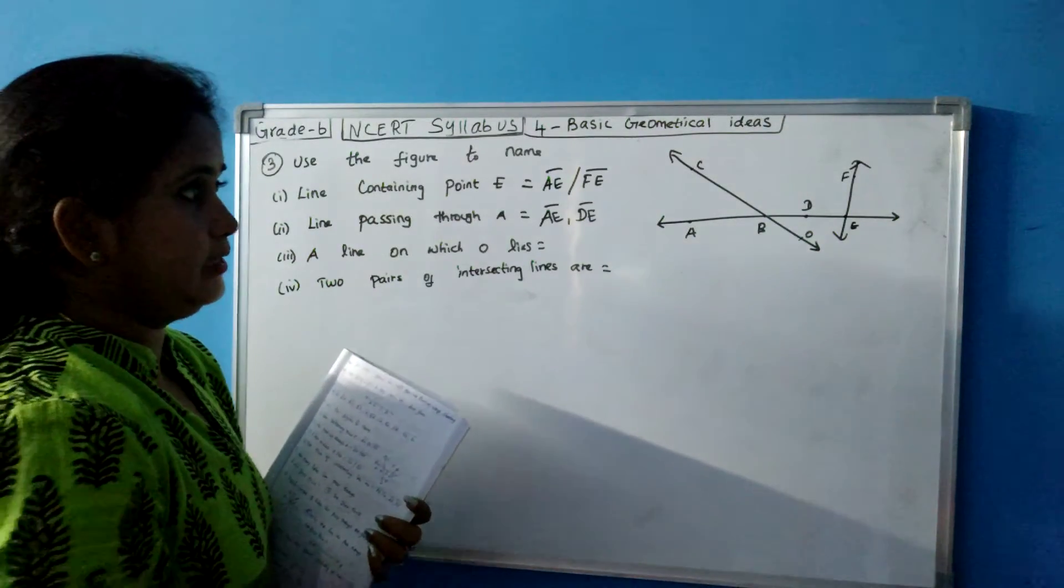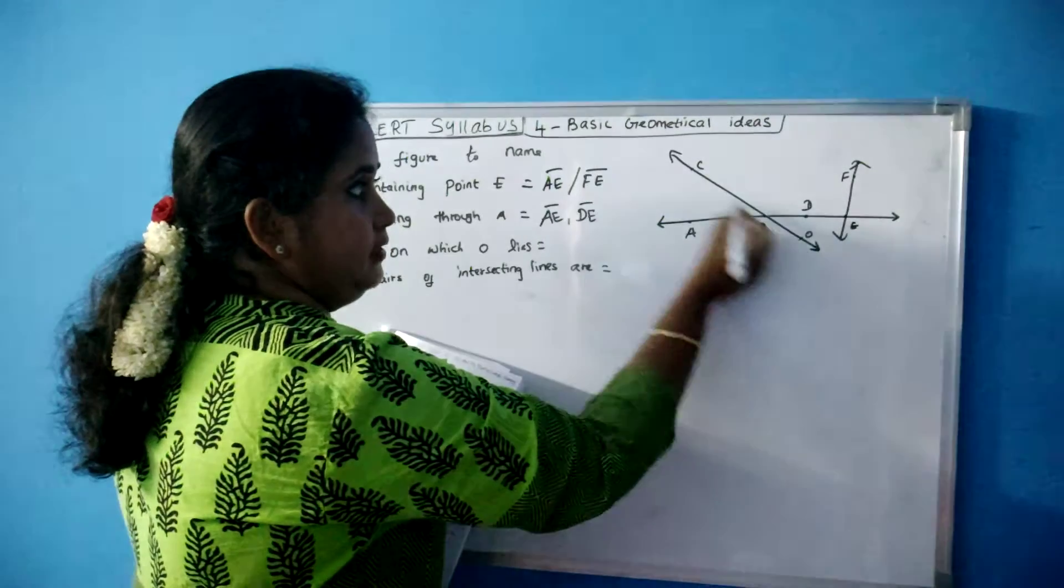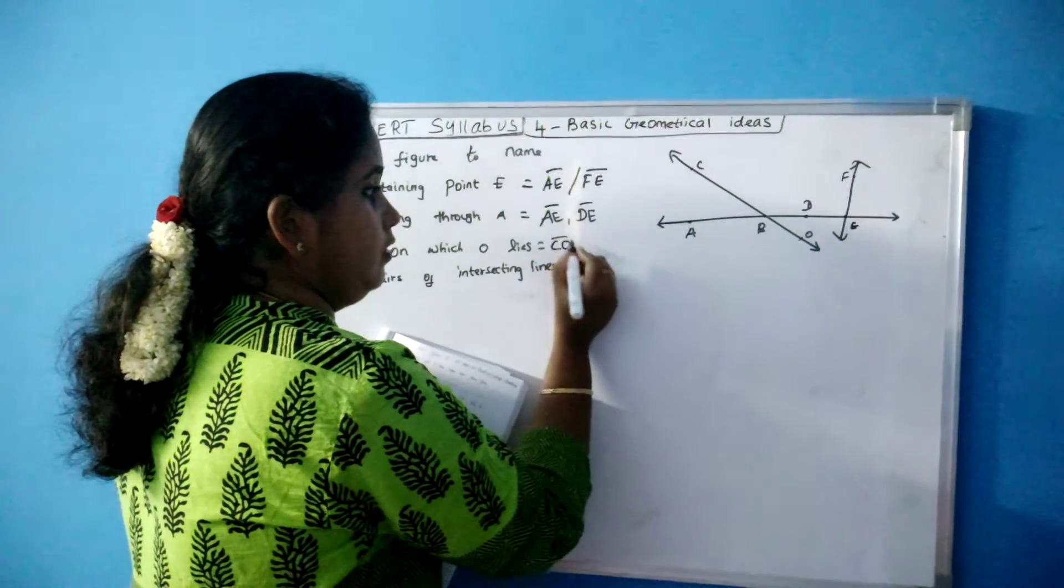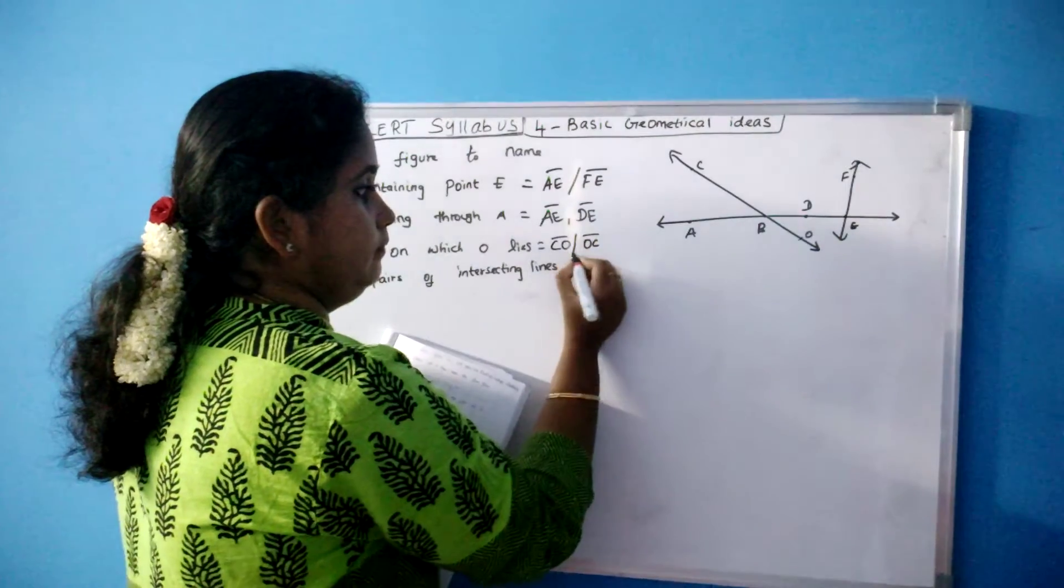Next, a line on which O lies. O is lying on which line? This line. So it can be written as CO or OC.